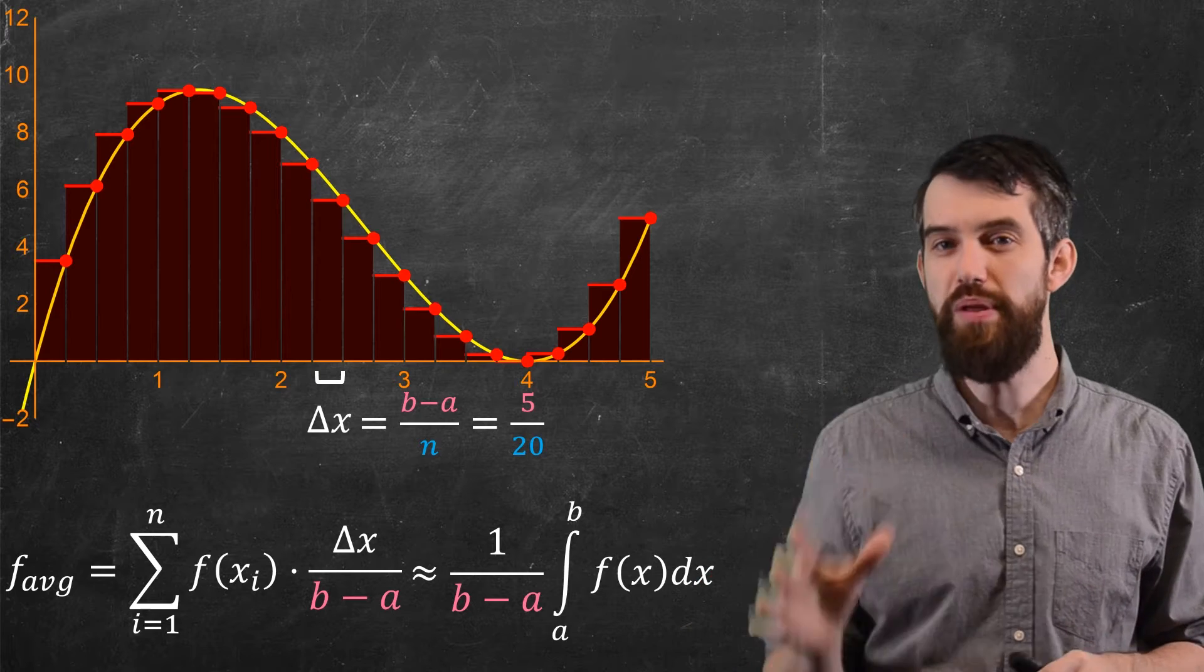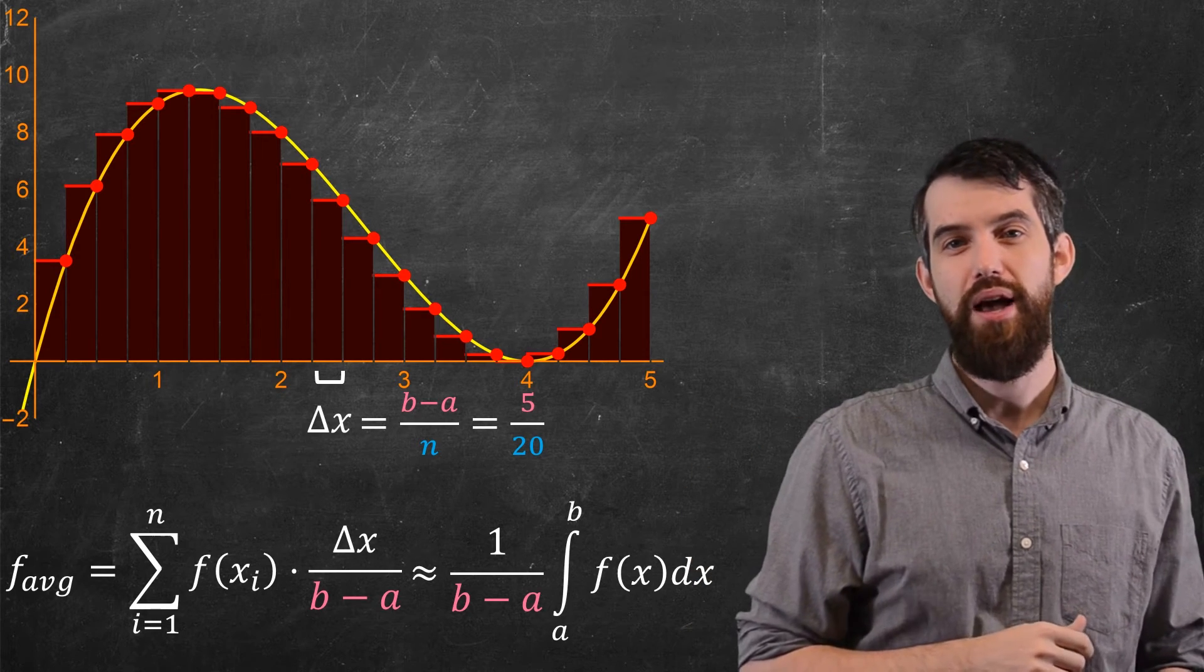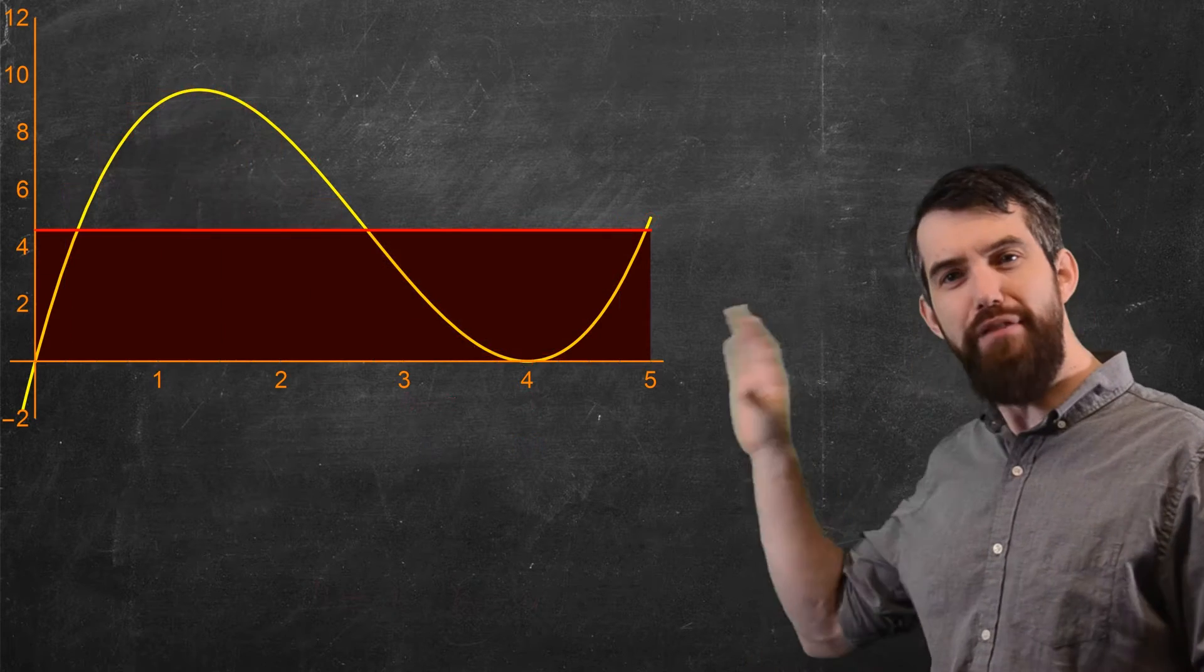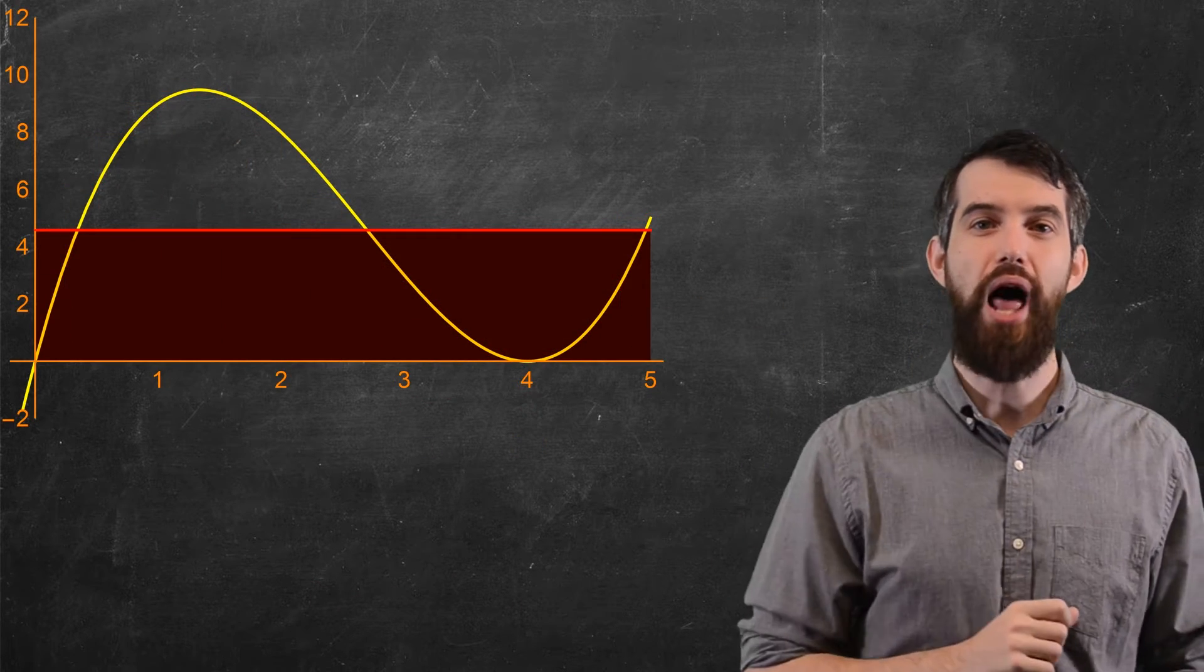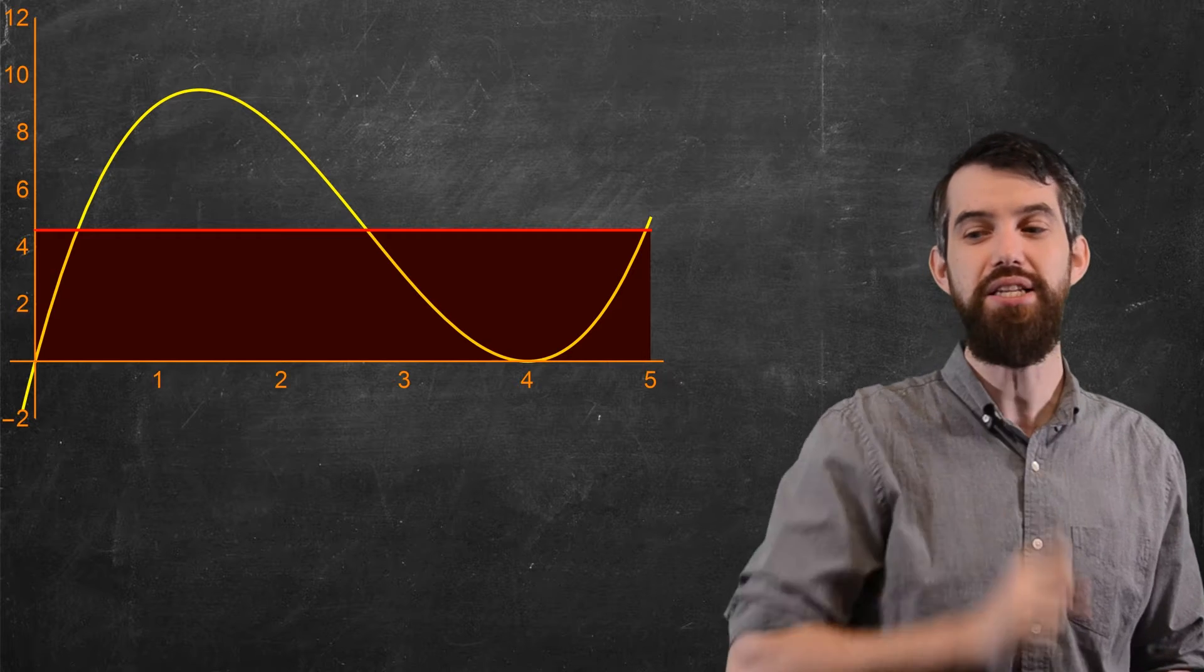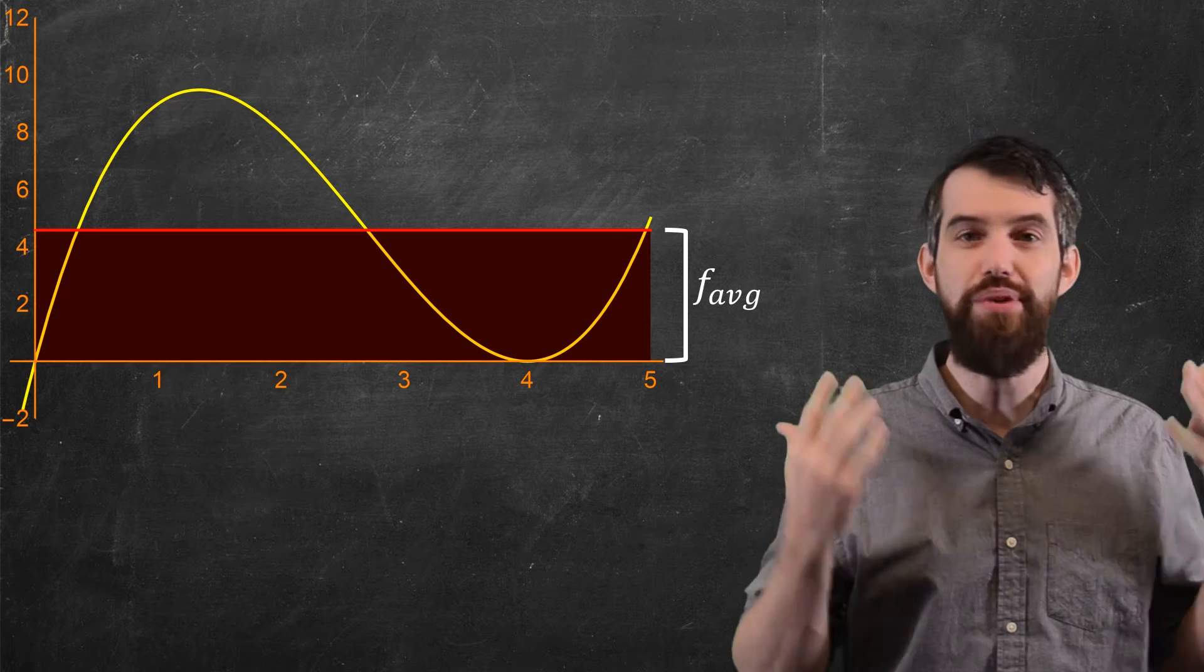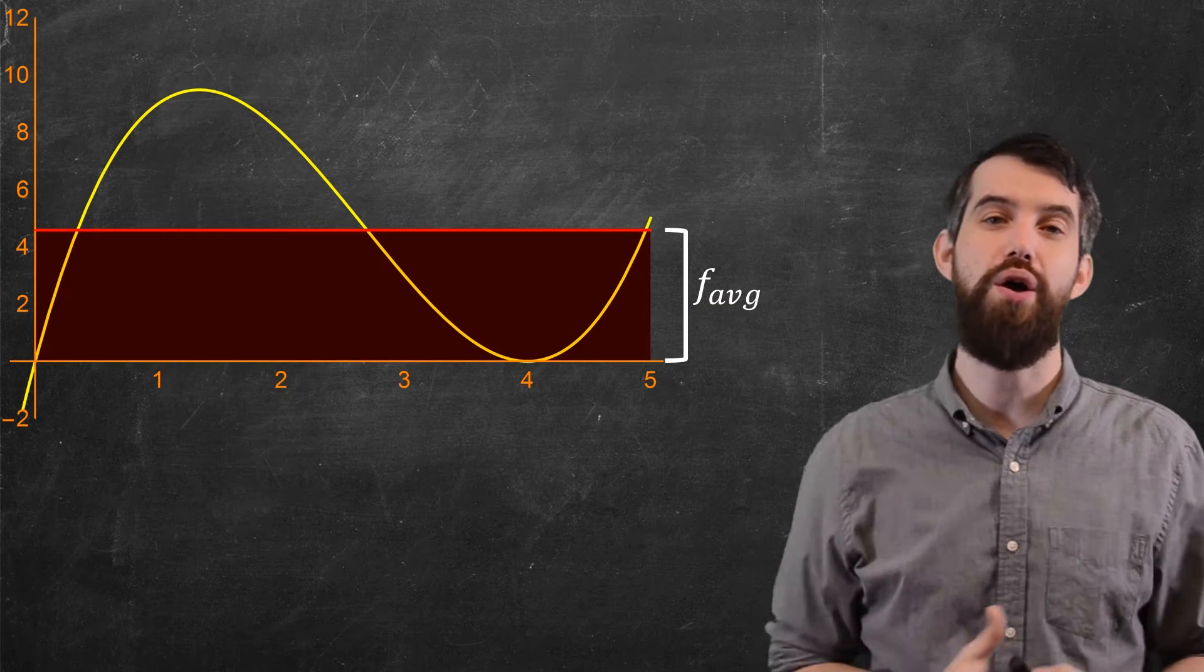Alright, so let's interpret this a couple different ways, then we're going to do a concrete example. I'm going to first of all draw my function, and what I've given here is a horizontal line, and that horizontal line has the height of whatever f average is. So I figured out this f average, I've computed it at some number, and I'm going to just draw it on my graph.